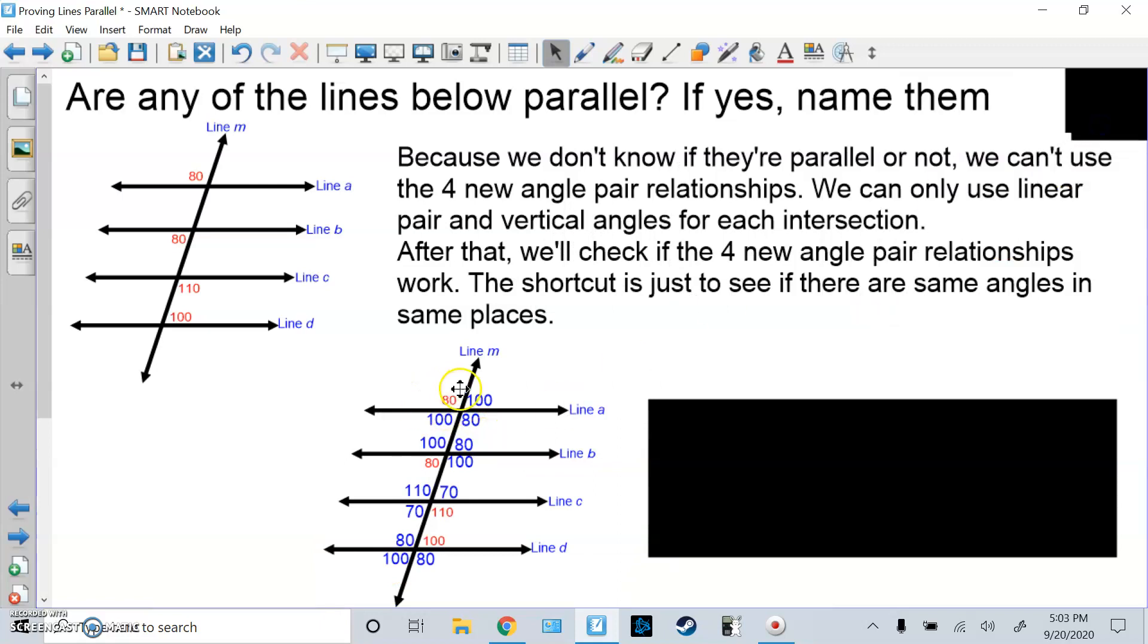So if I solve for each intersection: vertical angles 80 and 80, linear pair 180 minus 80 is 100, and then vertical angles. Here, vertical angle, linear pair, vertical angle. Here I did linear pair, linear pair, linear pair, or you can do vertical angles, your choice. In here, linear pair, vertical angles, linear pair.